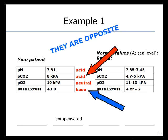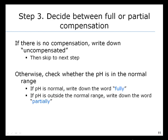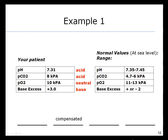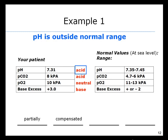Step three is to decide between full or partial compensation. If there is no compensation, write down 'uncompensated' and skip to the next step. Otherwise, check whether the pH is in the normal range. If the pH is in the normal range, write down 'fully.' If the pH is outside the normal range, write down 'partially.' Here, the patient is at least compensated, and the pH is in the acidic range — not in the normal range — therefore it is partially compensated.